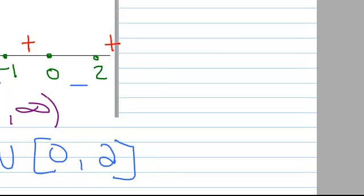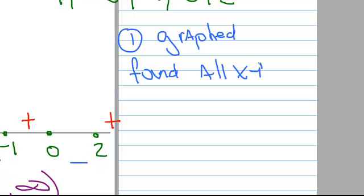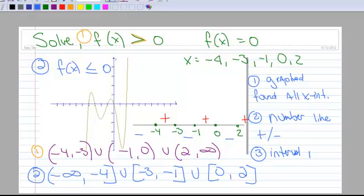So let me just review quickly our steps here. So number 1, we graphed it. And then kind of simultaneously with number 1, we found all x-intercepts. Number 2, we put them on this little number line. And then we did a shading, or we did a plus-minus of when the graph is above and below. And then number 3, we wrote our answer in interval notation. And that's how you do polynomial inequalities.